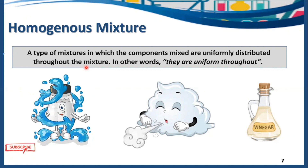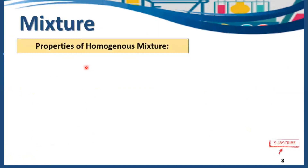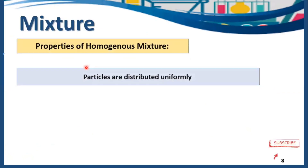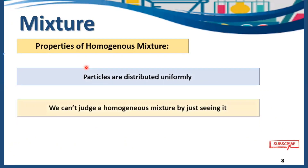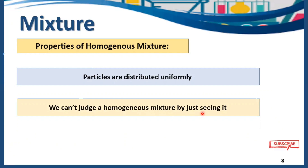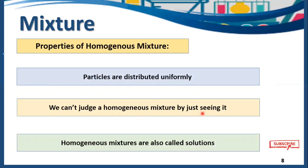Some properties of homogeneous mixture: particles are distributed uniformly throughout the mixture. We can't identify a homogeneous mixture just by looking at it — for example, a salt solution and a sugar solution look the same, and you cannot tell which is which because the particles are homogeneously distributed throughout. Homogeneous mixtures are also called solutions; most homogeneous mixtures are solutions, like vinegar.